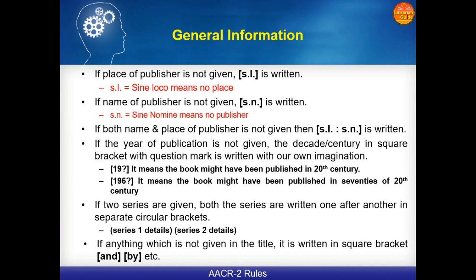If the year of publication is not given, the decade or century is written in square brackets with a question mark, based on our own estimation. For example, [19??] means the book might have been published in the 20th century. If we write [196?], it means the book was published in the 1960s of the 20th century. If two series are given, both series will be written one after another in separate circular brackets. If anything is not given in the title, it is written in square brackets.